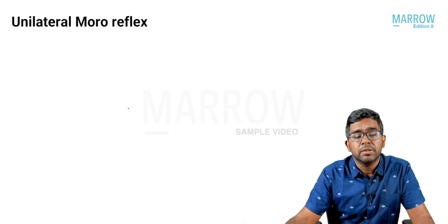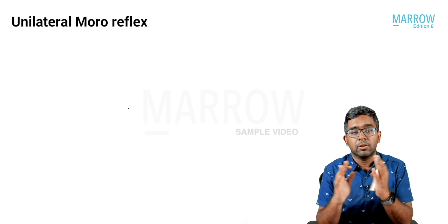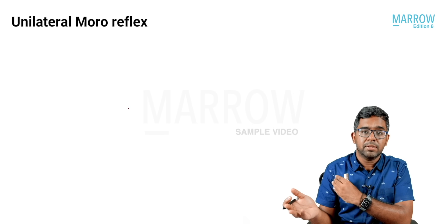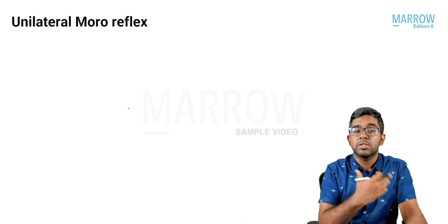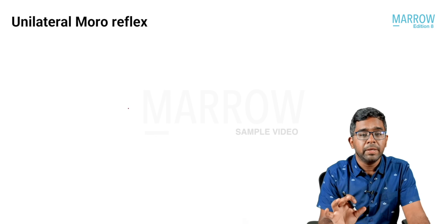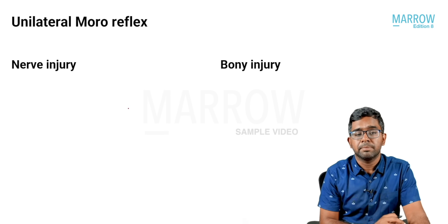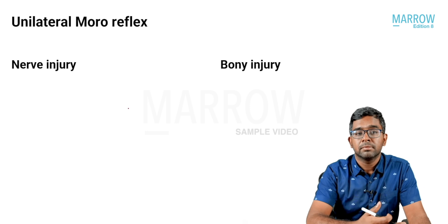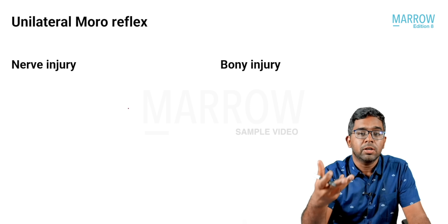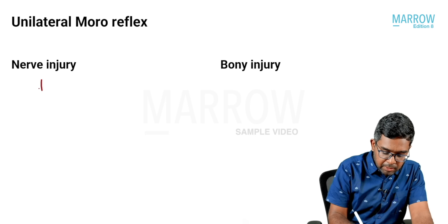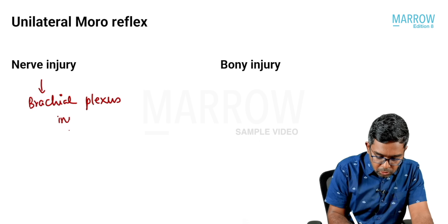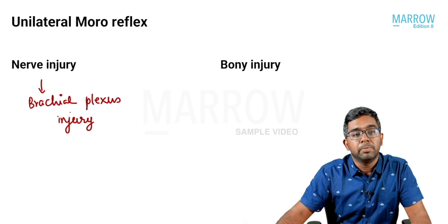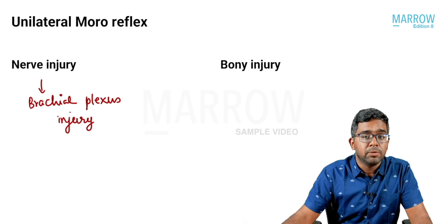What conditions give a unilateral Moro reflex? Normally the Moro reflex is bilateral — both sides show the response. If only one side shows a response, the problem lies in the non-responding limb, which could be due to a nerve injury or bone injury. A nerve injury causing this would be brachial plexus injury — specifically Erb's palsy or Klumpke's paralysis.